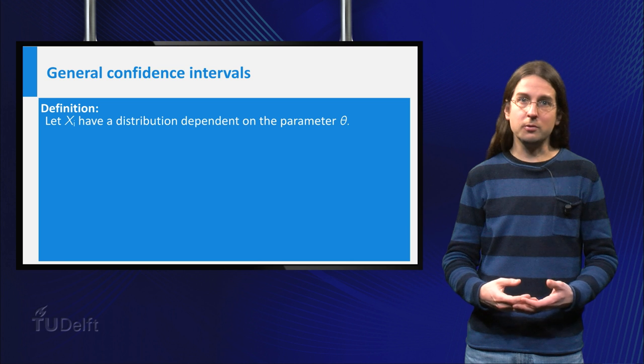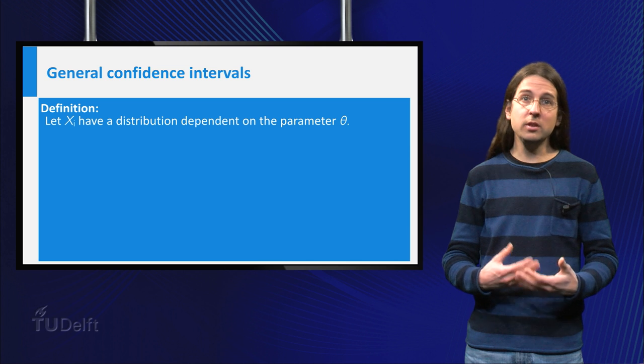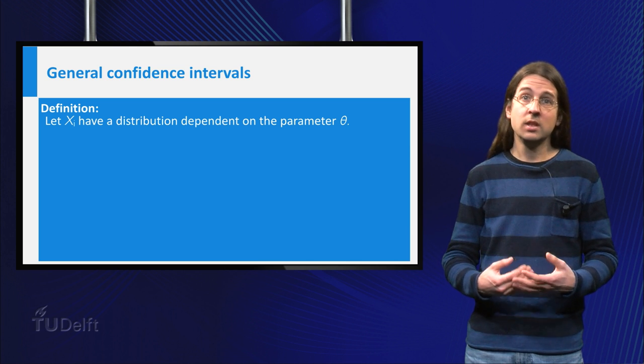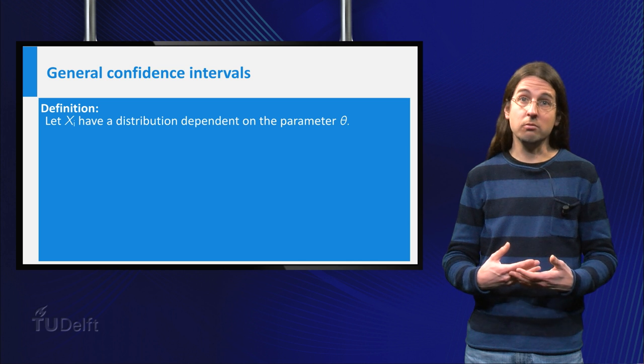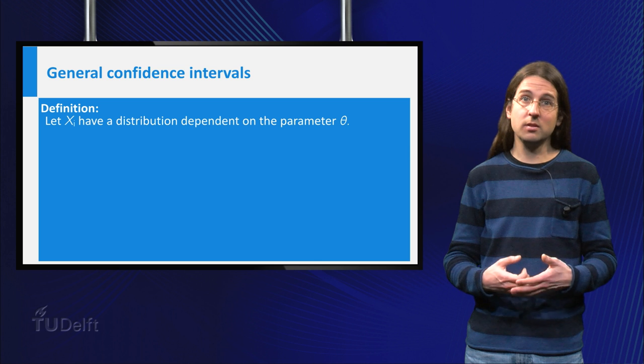To construct an interval you need a lower and an upper bound, both of which depend on your measurements Xi. In general, if the measurements are given by the random variables capital Xi, whose distribution depends on the parameter theta,